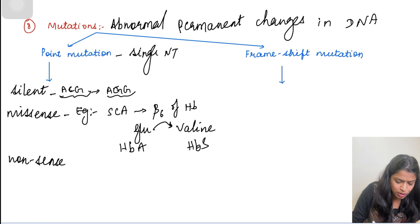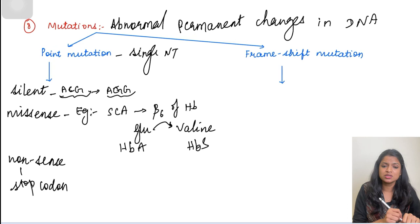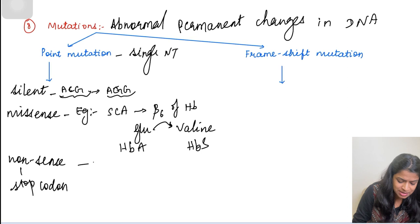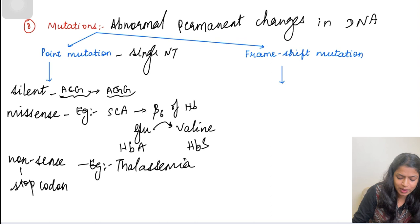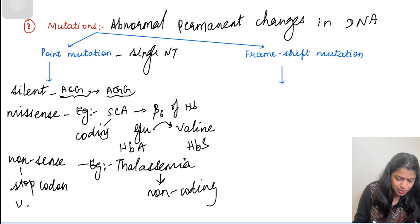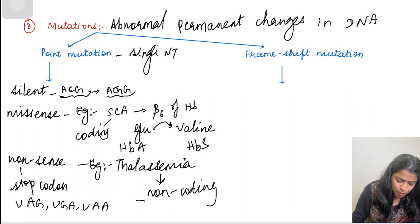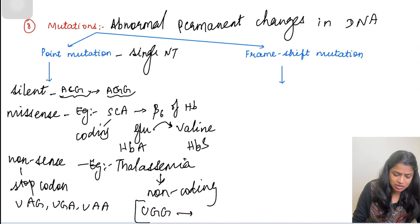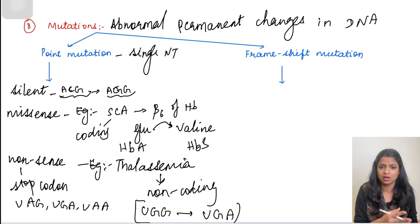A nonsense mutation results when a stop codon is introduced due to a nucleotide change, causing premature termination of the protein. Stop codon examples are UAG, UGA, and UAA. For example, if a UGG sequence mutates to UGA, a stop codon is formed, resulting in premature termination — a nonsense mutation. The best example here is thalassemia, where mutations usually happen in non-coding regions, while in sickle cell anemia they happen in coding regions.